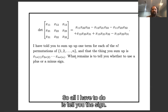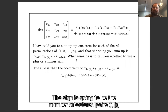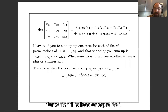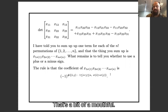The sign is going to be determined by the number of ordered pairs i, j for which 1 ≤ i < j ≤ n and σ(i) > σ(j). That's a bit of a mouthful, so let's see an example.